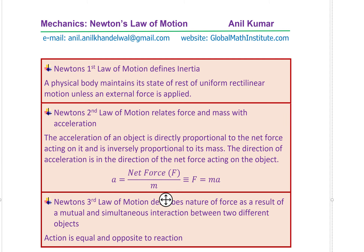Now, let's look into Newton's laws and see how that relates to mechanics. Newton's first law of motion defines inertia — a physical body maintains a state of rest or uniform rectilinear motion unless an external force is applied. Newton's second law of motion relates force and mass with acceleration: the acceleration of an object is directly proportional to the net force acting on it and inversely proportional to its mass. So, acceleration is proportional to the net force directly and inversely proportional to mass — it could be rewritten as F equals ma.